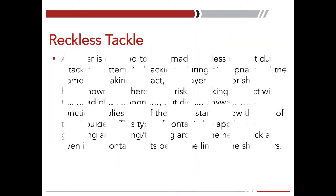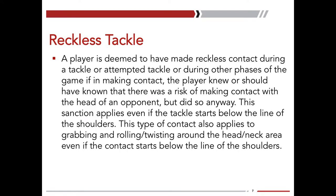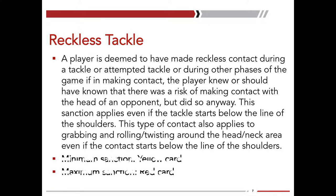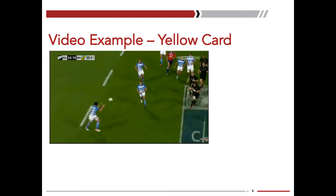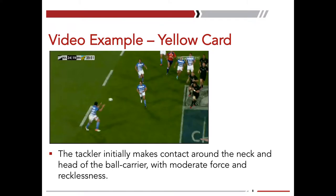Now we'll move on to our definition of a reckless tackle. A player is deemed to have made reckless contact during a tackle or attempted tackle or during other phases of the game if, in making contact, the player knew or should have known that there was a risk of making contact with the head of an opponent but did so anyway. This applies even if the tackle starts below the line of the shoulders, including grabbing and rolling, twisting around the head or neck area. The key here is that the player knew or should have known there was a risk — this is a player responsibility.